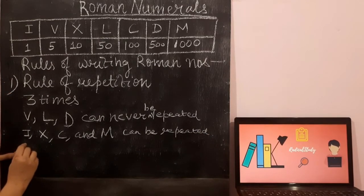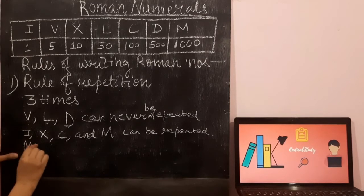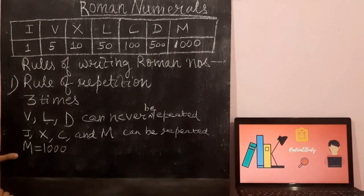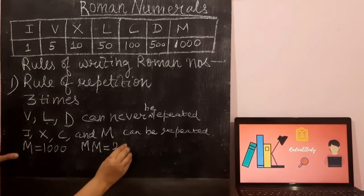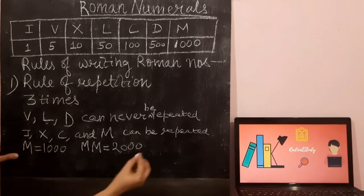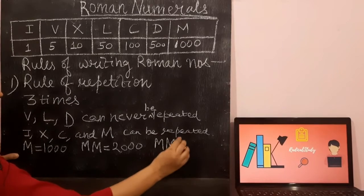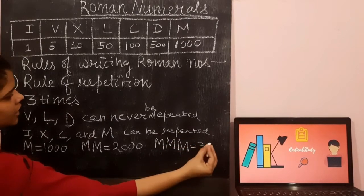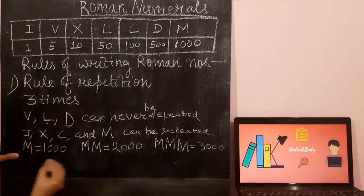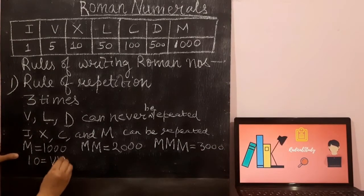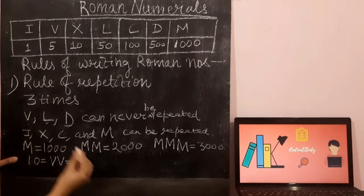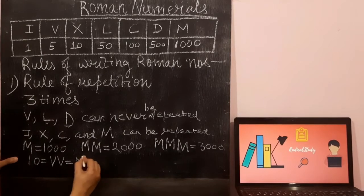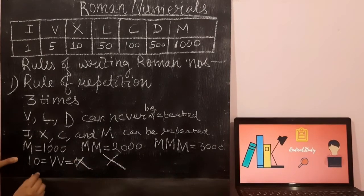If we want to represent 1000, we write M. If we want to represent 2000, we write MM — two times — which is 2000. If we want to represent 3000, we write MMM — three times — which is 3000. So to represent 10, we do not write VVV, as V cannot be repeated. We represent 10 by X. This was the rule of repetition.